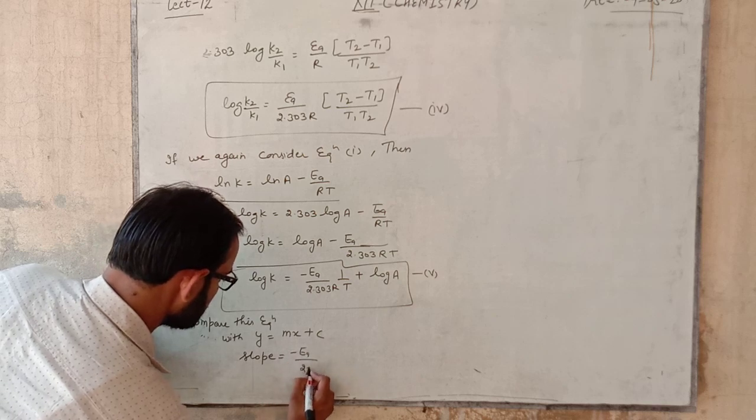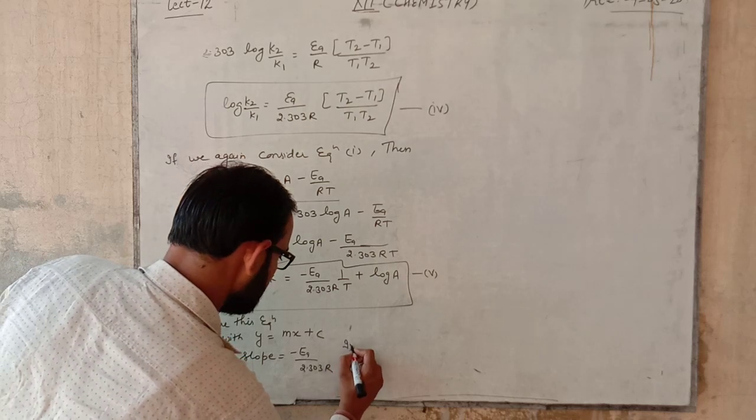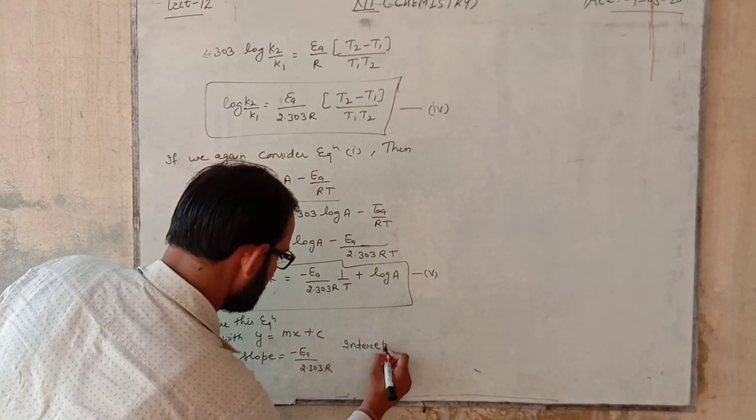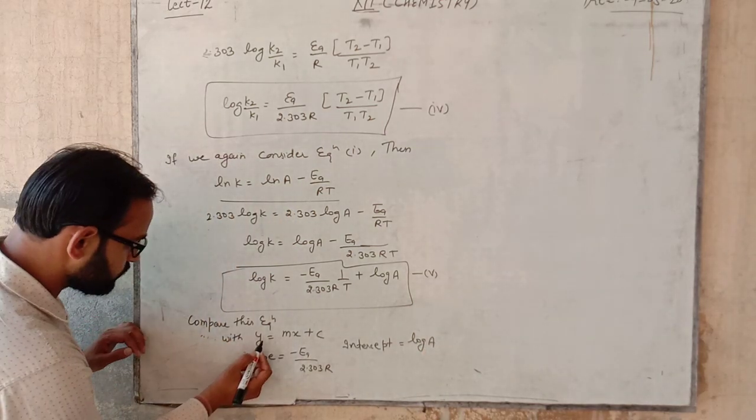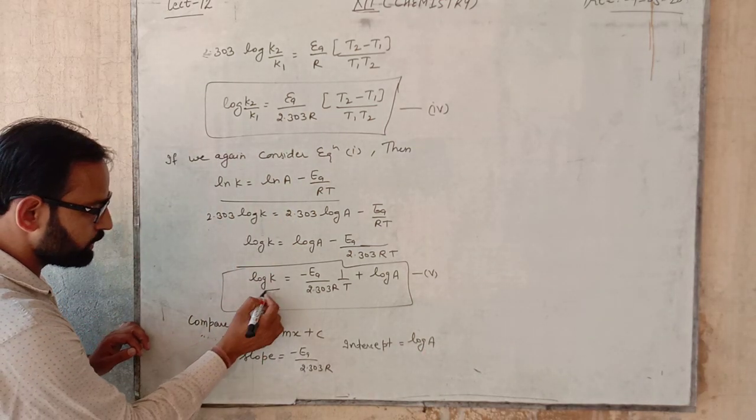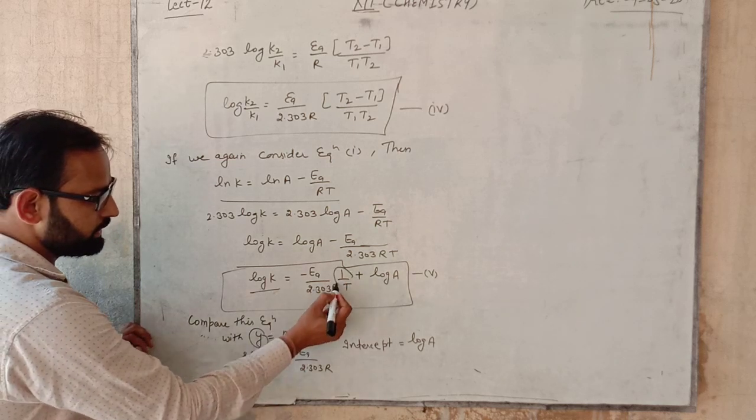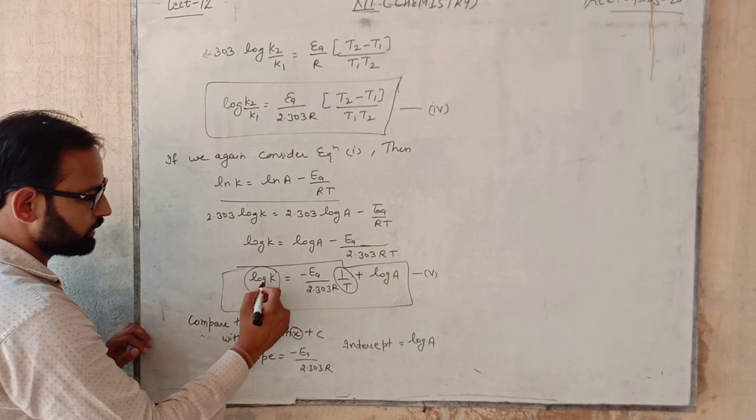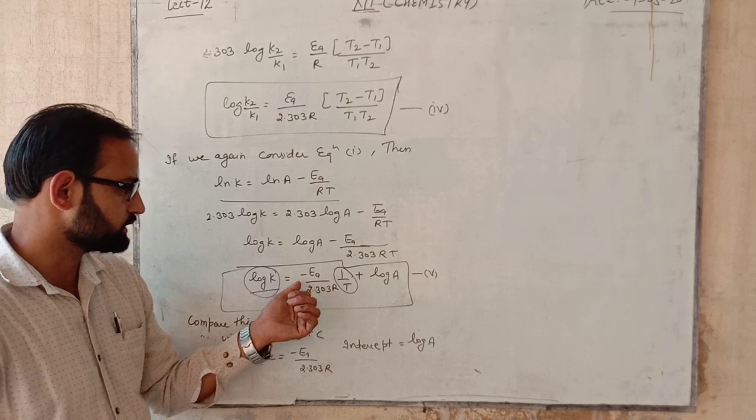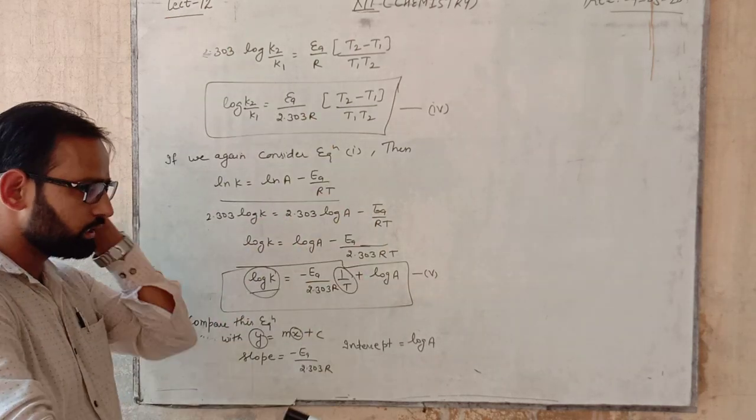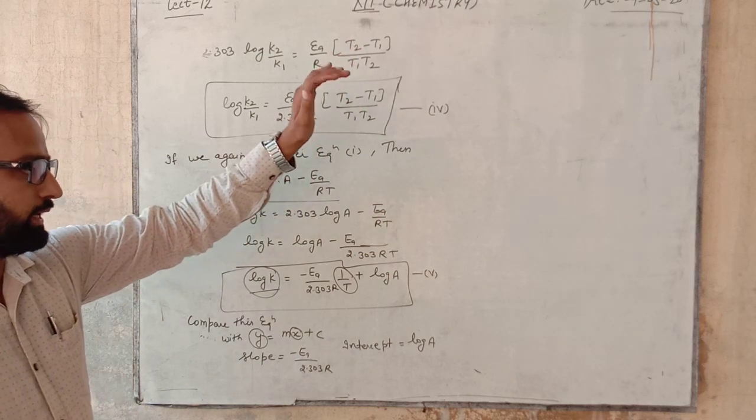Slope will be minus Ea upon 2.303 R and intercept will be log A. Students, y quantity is what will be on y axis, that is log k. We plot 1 by T on x-axis and log k on y-axis. The graph will be between these two and the slope value is negative, so straight line will be from top to bottom.